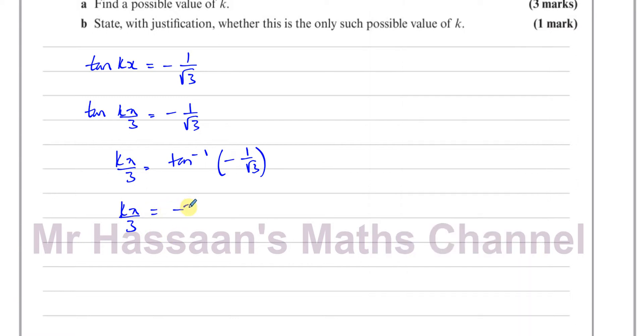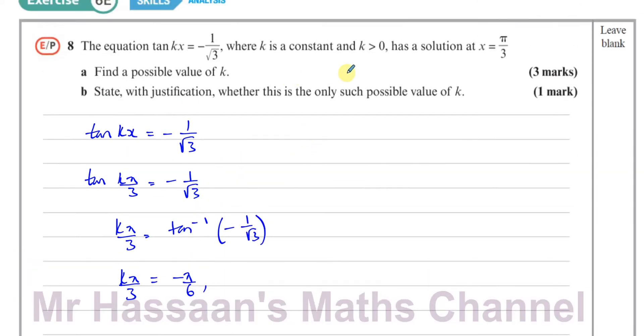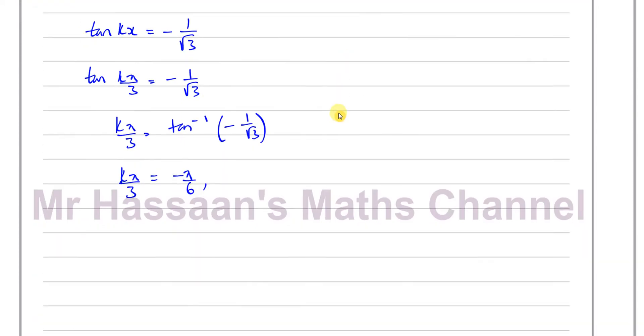Okay, so that's a principal solution. However, if I use that as my solution here, my k value is going to be negative. We want k to be positive. So we've got to think about another value where the inverse tan of minus 1 over root 3 will give us a positive answer.